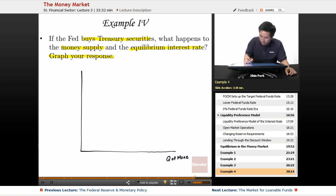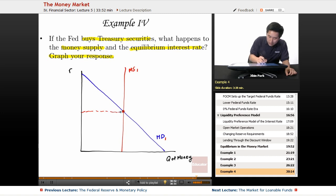Call this the quantity of money and call this interest rate here. You have the money demand MD here and you also have the money supply MS1 here, and this is the equilibrium interest rate r1 here.